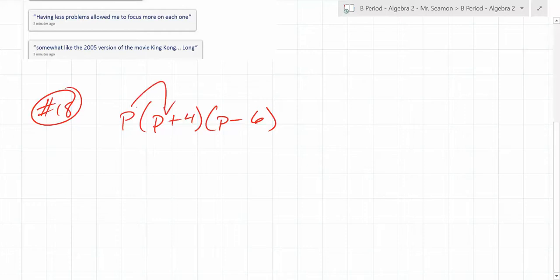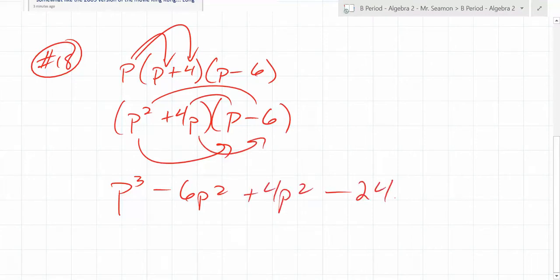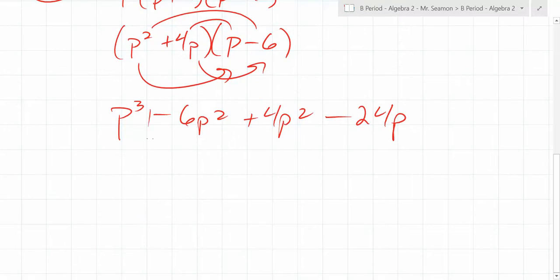So it's going to be distributed in, and you distribute it in. It becomes what? p squared plus 4p times p minus 6. Now, first outer inner last, you end up with p cubed, if I could write p cubed, minus 6p squared plus 4p squared minus 24p. What can you combine in there? Yeah, so you end up with p cubed minus 2p squared minus 24p. There it is.